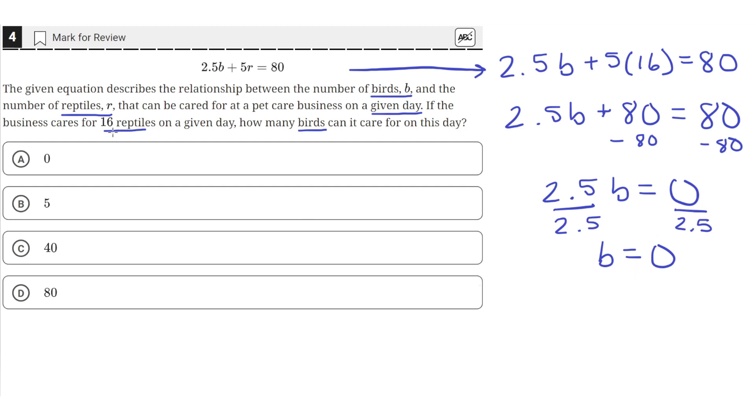So in this case, if this pet care business takes care of 16 reptiles on a given day, they can't care for any more birds, since that already breaches their max of 80 pets taken care of. So when 16 reptiles are taken care of, only 0 birds can be taken care of. So the correct answer is answer choice A.